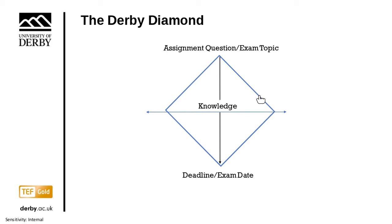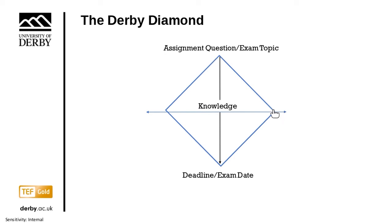What the diamond shows is how you need to increase that knowledge as you study, and then there needs to come a point when you stop increasing your knowledge and start focusing it back down to your assignment topic — whether that's a written essay or an exam. You need to bring it down to be more focused towards your deadline. This turning point won't necessarily be precisely at the halfway point; it will vary from assessment to assessment and module to module.